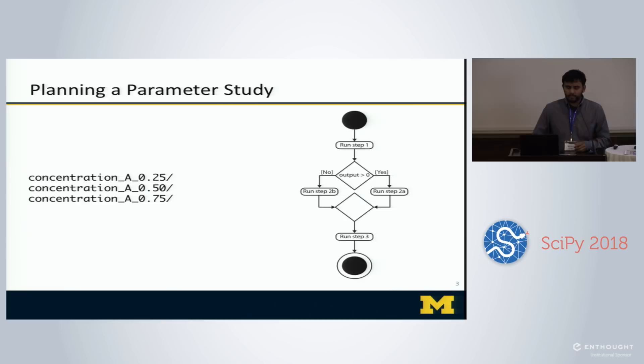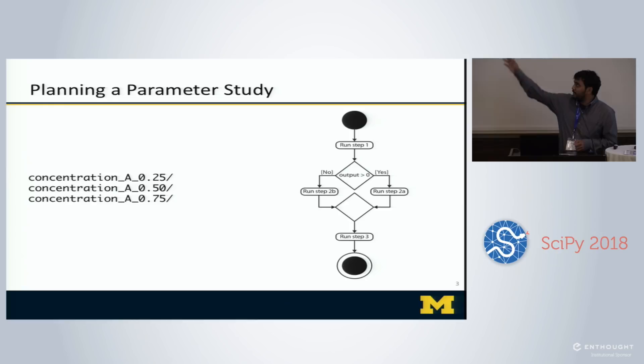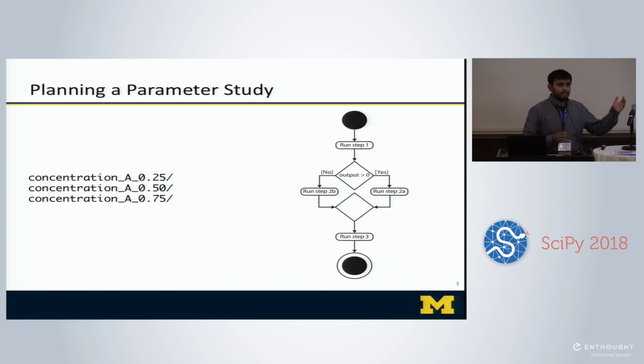To make this more concrete, consider a simple example. Imagine you're doing some sort of computational experiment with a two-dimensional parameter space — a binary system where you're measuring concentrations of two things. Initially your workflow is dumping out files and you decide to track the concentration of one species and store it in a certain way, but you've already made some implicit assumptions about how you want to store your data.